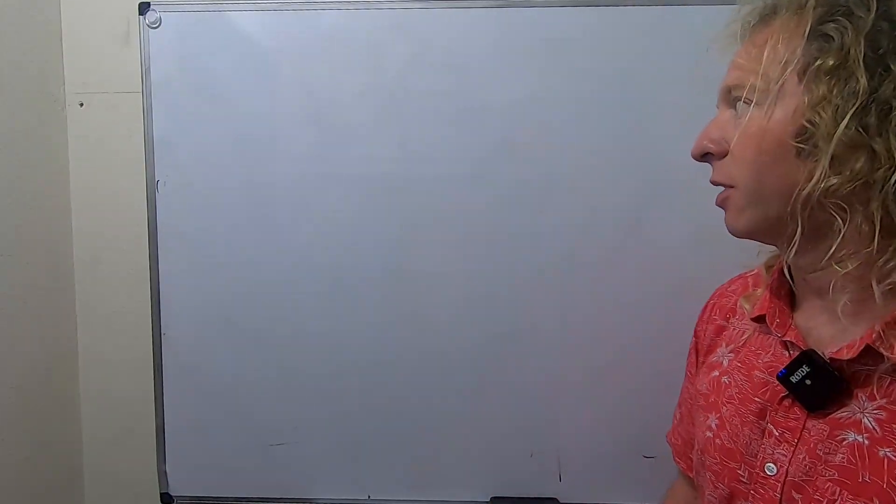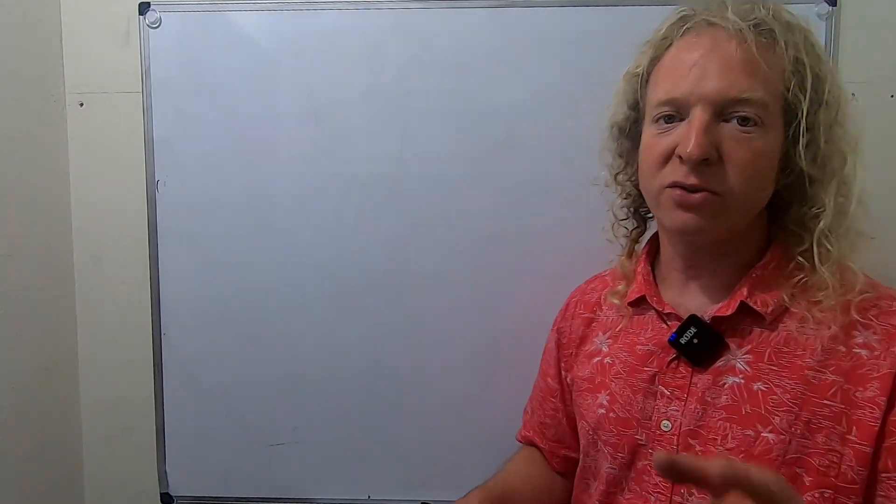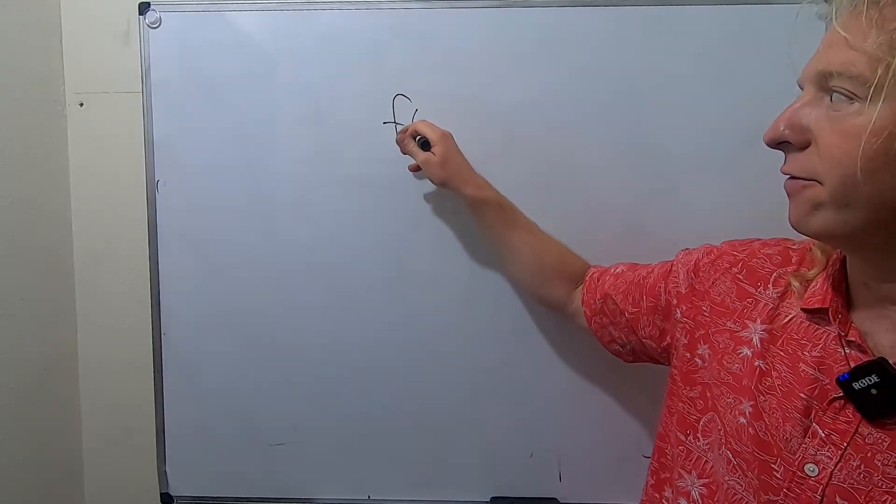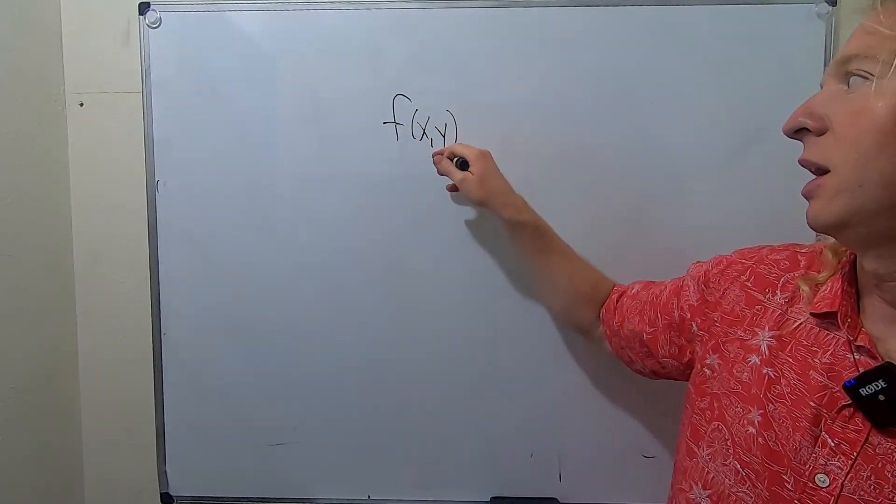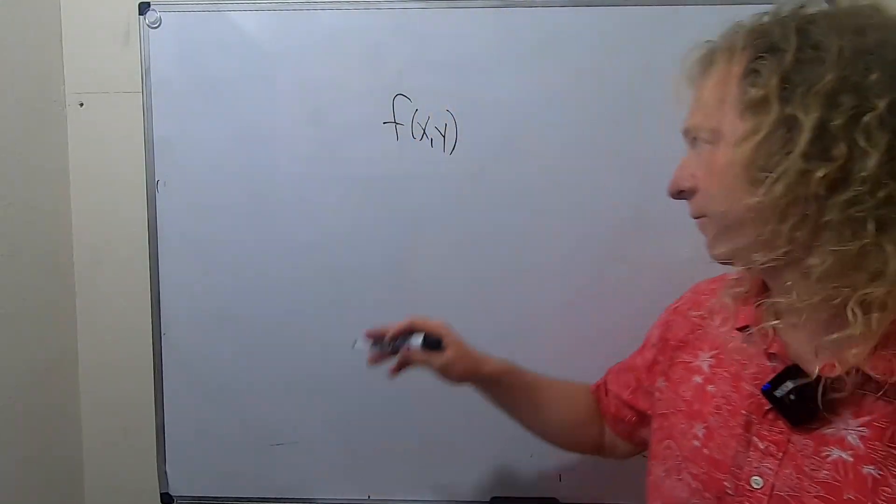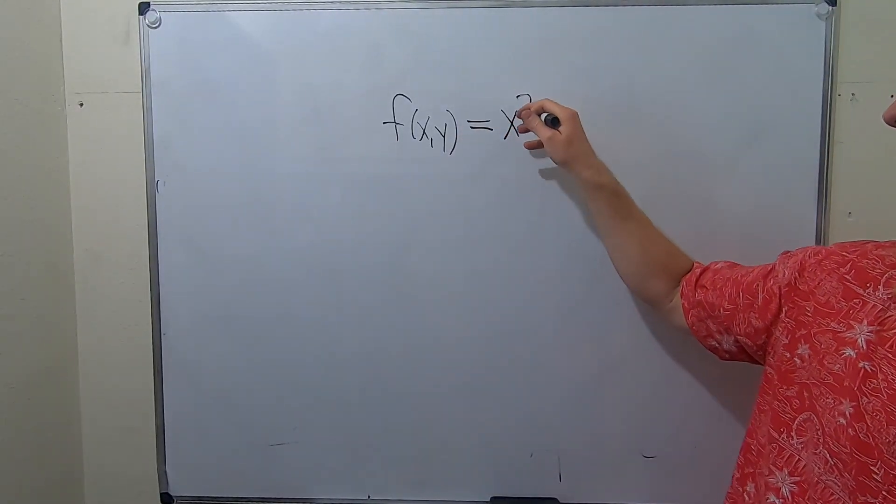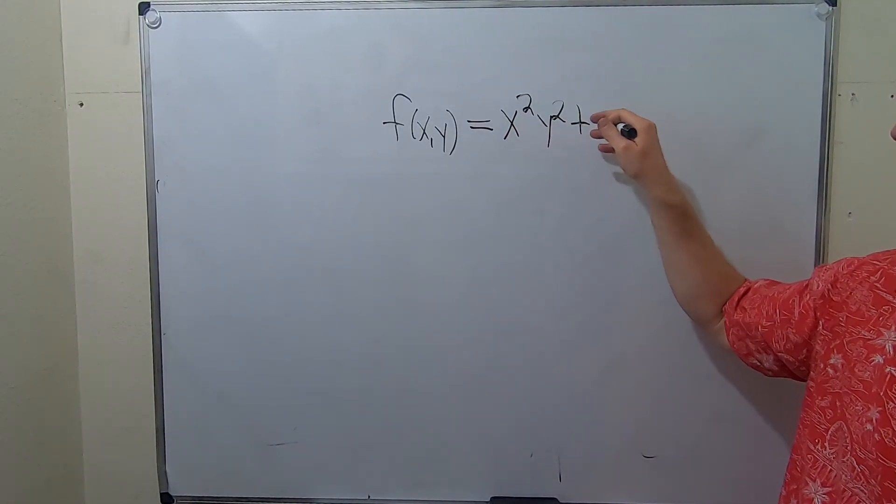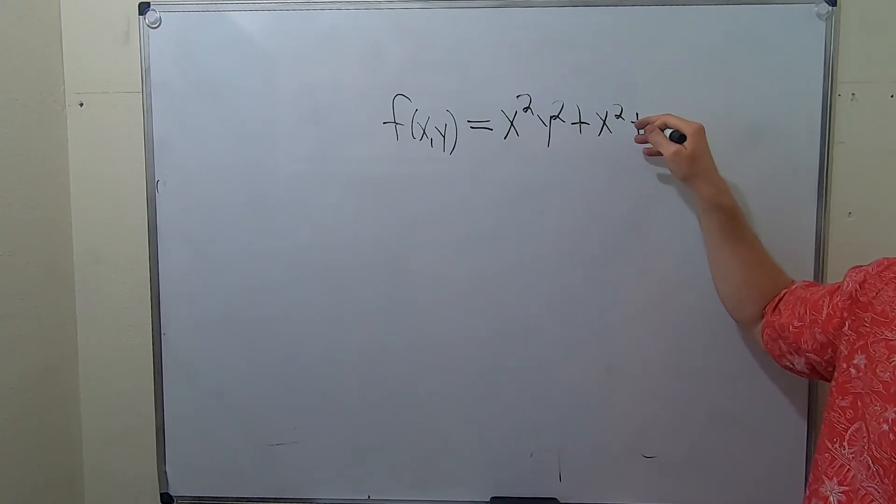In this video, we're briefly going to talk about partial derivatives. Say you have a function f(x,y). Let's make it a simple one for the purposes of this video. Say it's x² times y² plus x² plus y³.